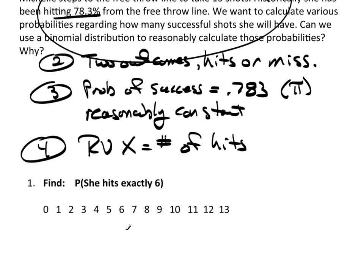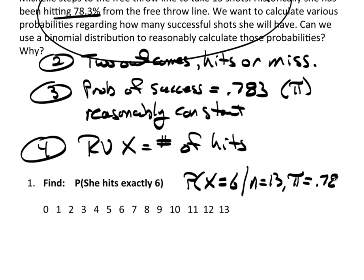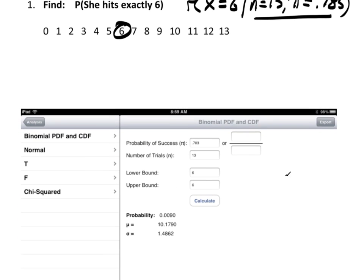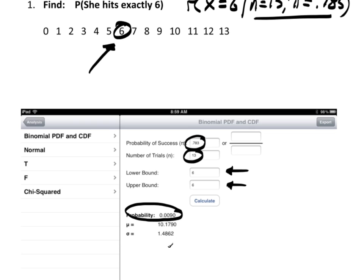Our first scenario: find the probability that she hits exactly 6. This is P(X = 6) given N = 13 and pi = 0.783. This completely specifies the binomial distribution. In TCStats, this is a PDF scenario — we enter probability of success 0.783, number of trials N = 13, lower bound 6, upper bound 6. The probability comes out to 0.0090.